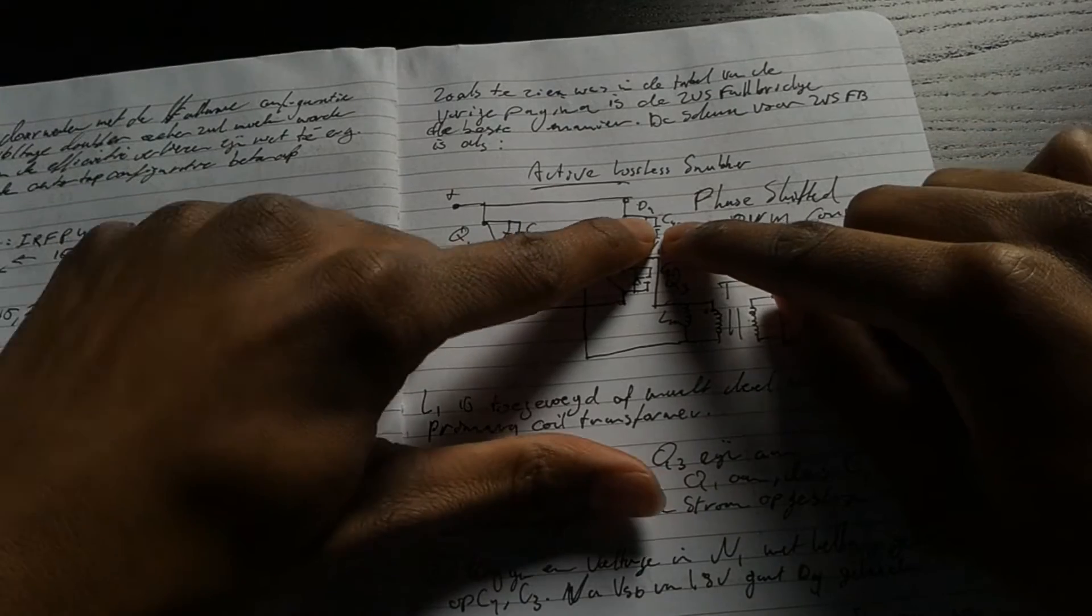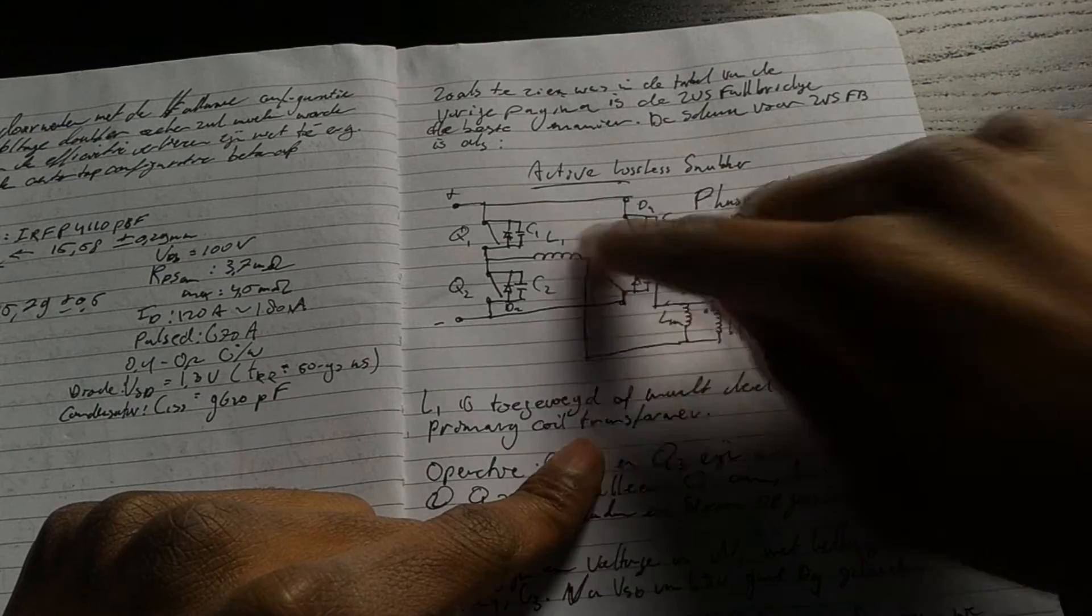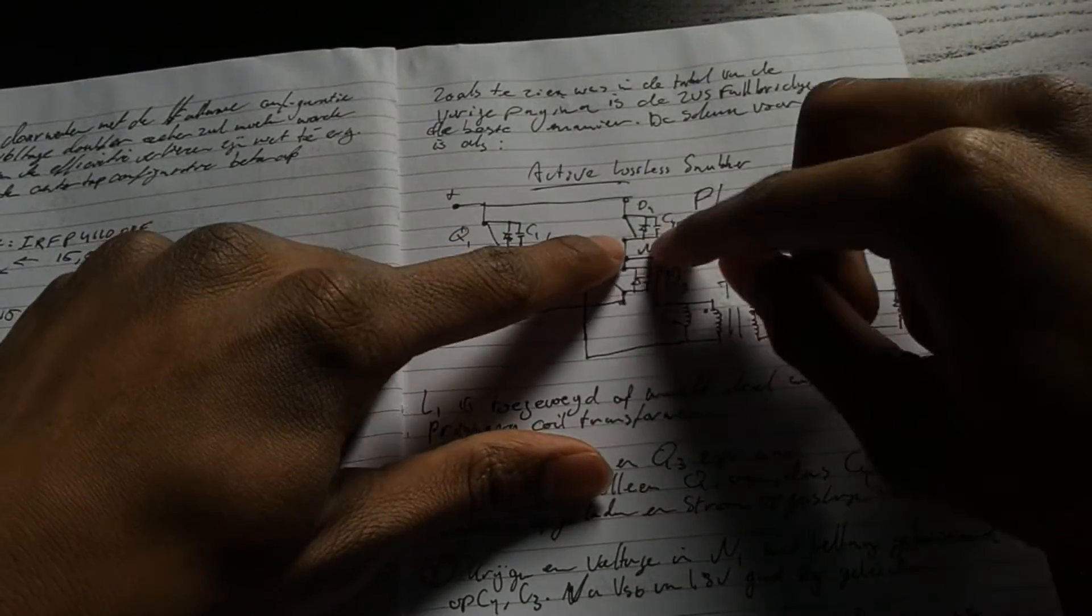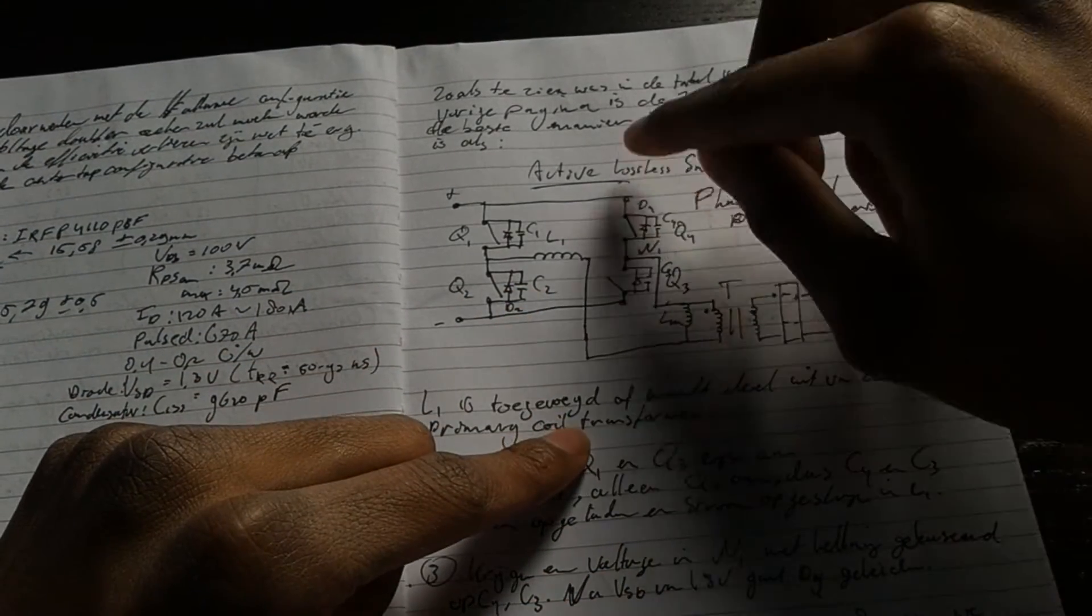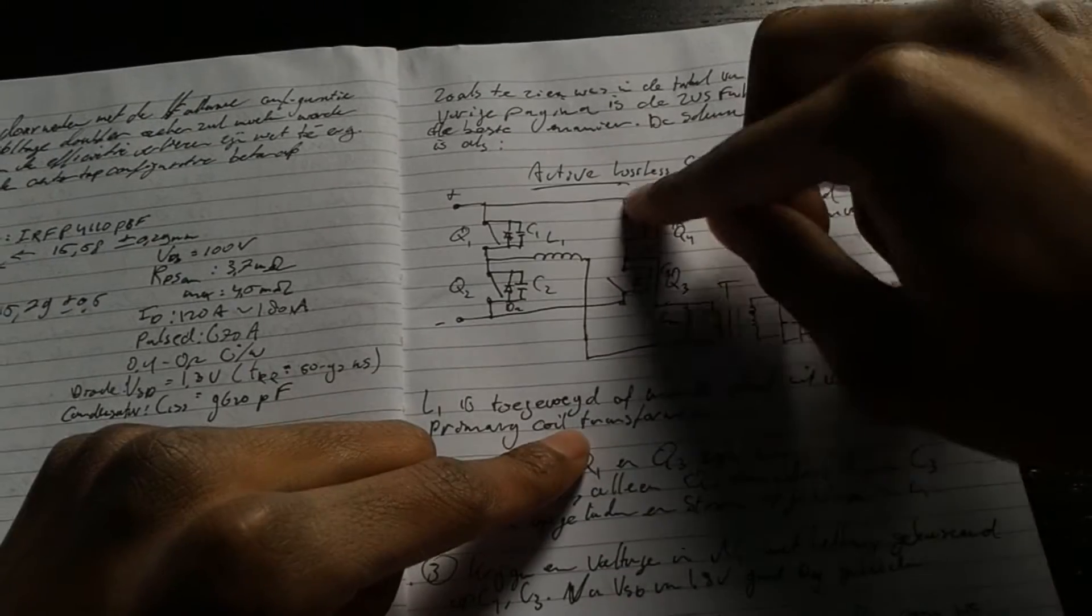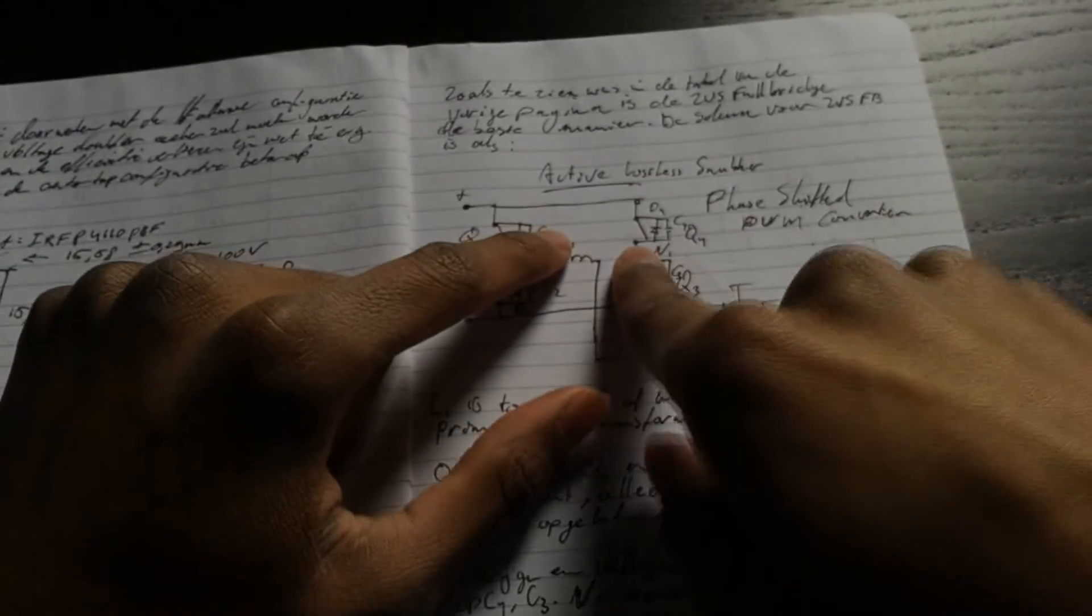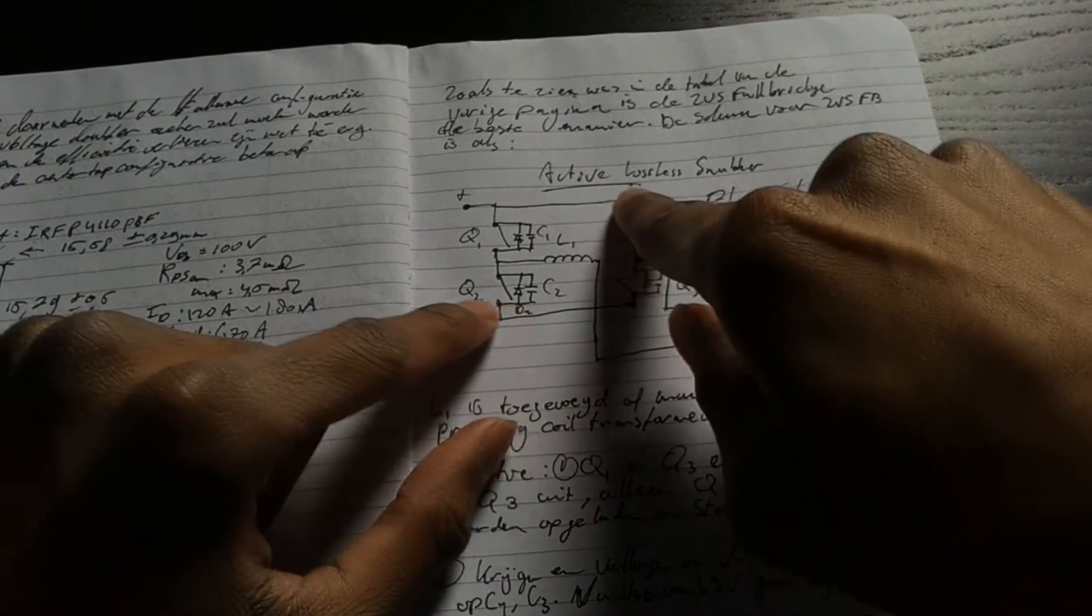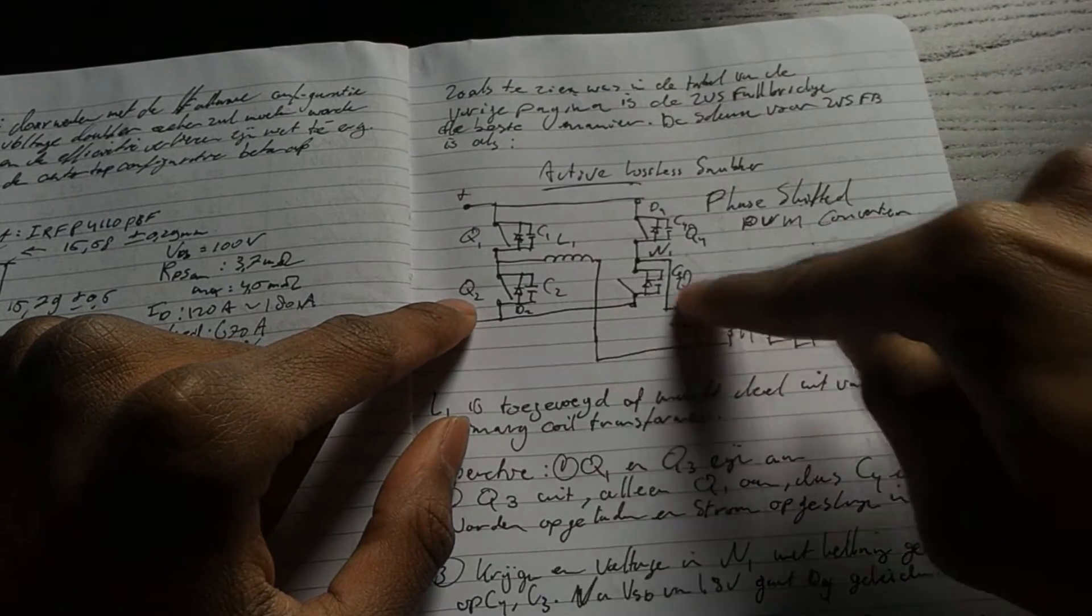When these capacitors are charged, this diode here becomes forward biased. Therefore, the voltage across this MOSFET starts to drop. You have zero voltage across this MOSFET now, because the same potential is right here and right here. So we have now no voltage across this MOSFET. Therefore, we can directly change it to the ON state, and we start to get the current flow from here to here.